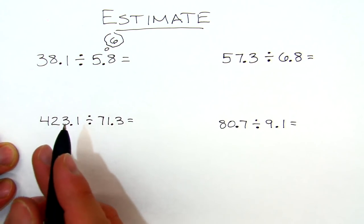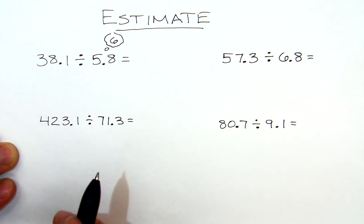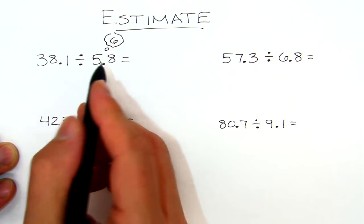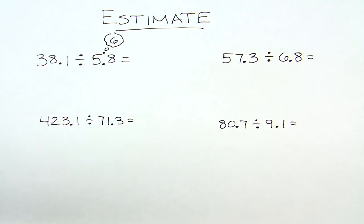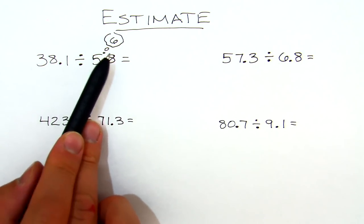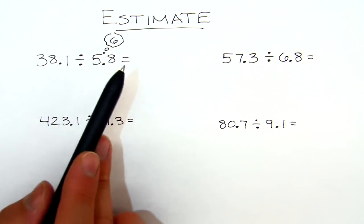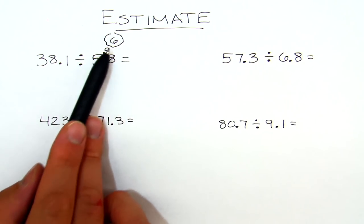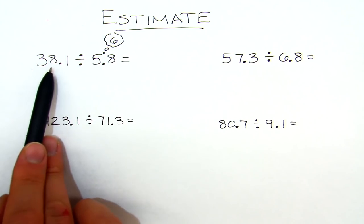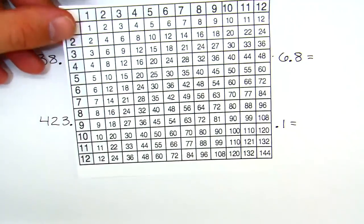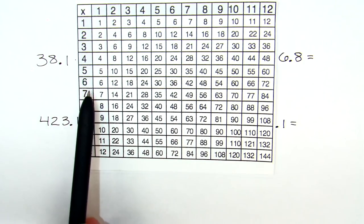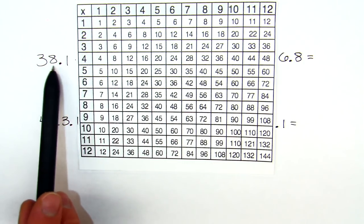Normally when we use estimation, we're doing it in our head - that's the skill we're trying to build up. So I'm writing it down but normally we would do these in our head. So it's 6. Now what I'm thinking about in my head is what multiple of 6 - 6, 12, 18, 24, 30 - which multiple of 6 is very close to 38. I'm gonna show you my thinking with this chart here.